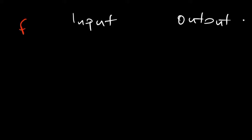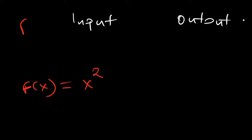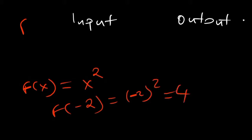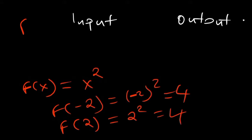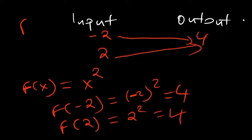Consider f(x) = x². If you plug in negative two: (-2)² = 4. And f(2) = 2² = 4 as well. Despite being opposite signs, both inputs give the same output. This means two or more inputs are matching up to one output — this is called a many-to-one function.